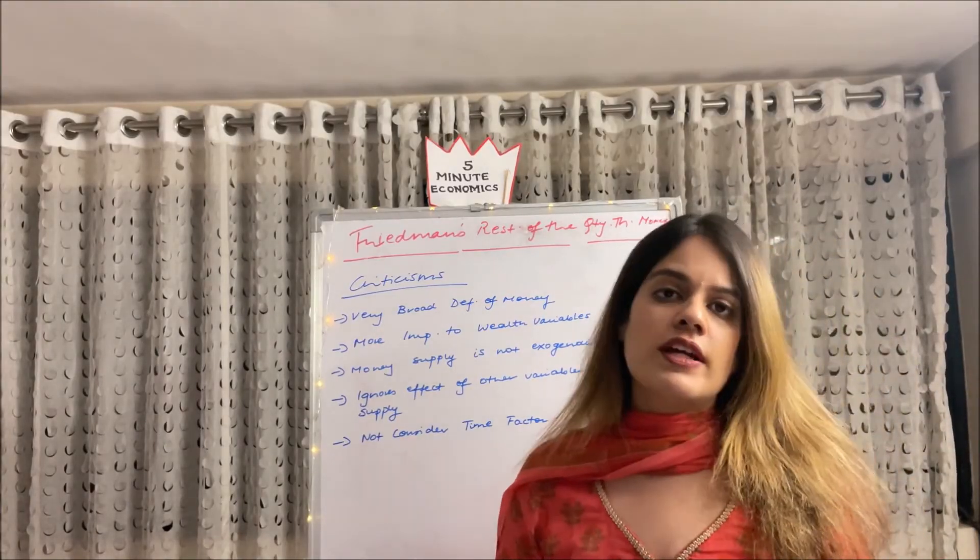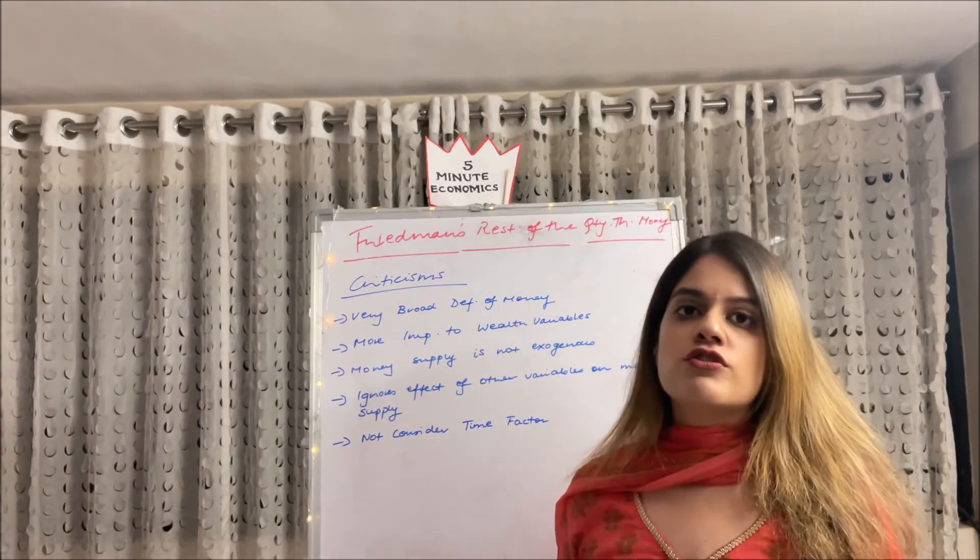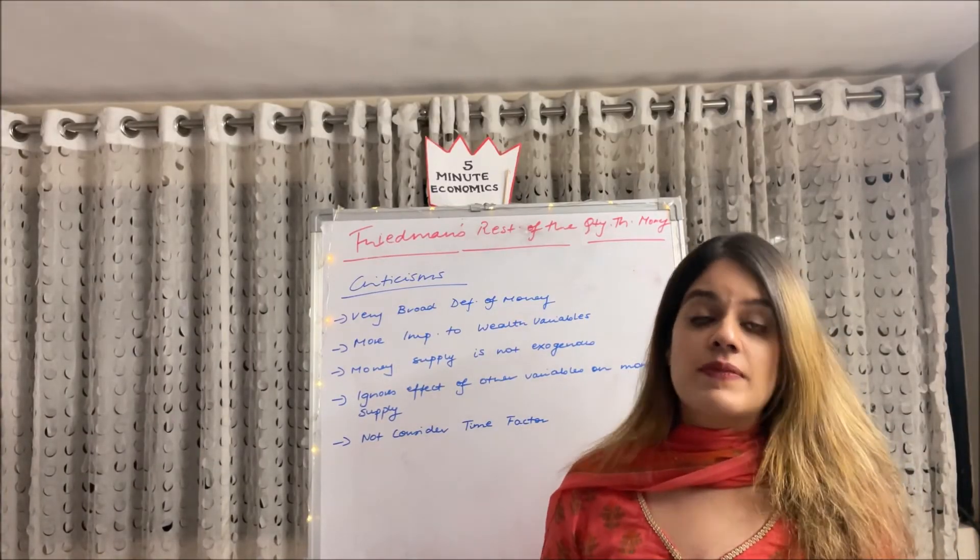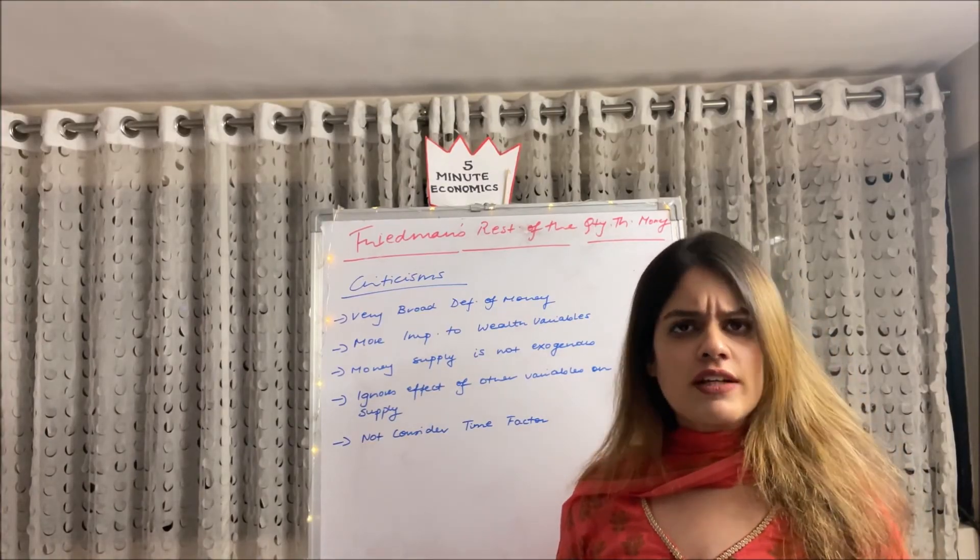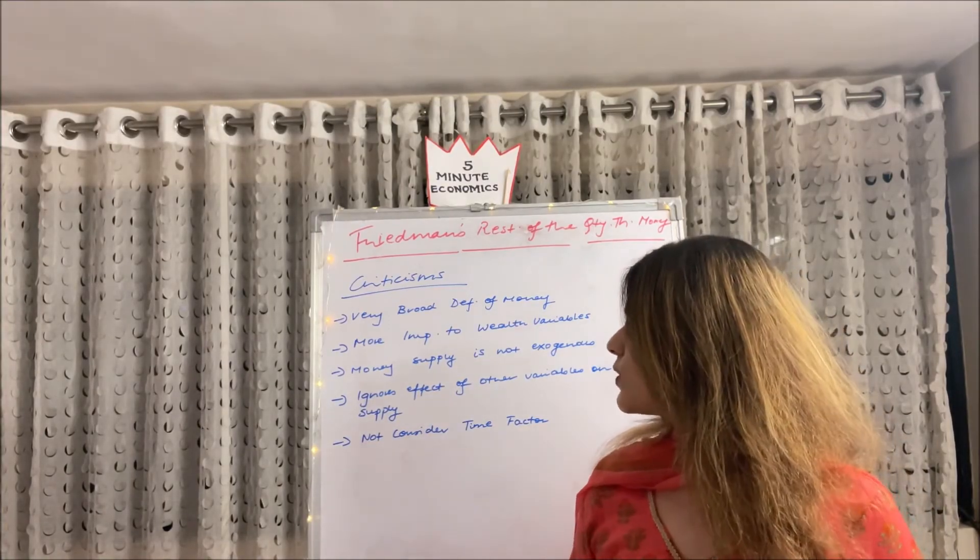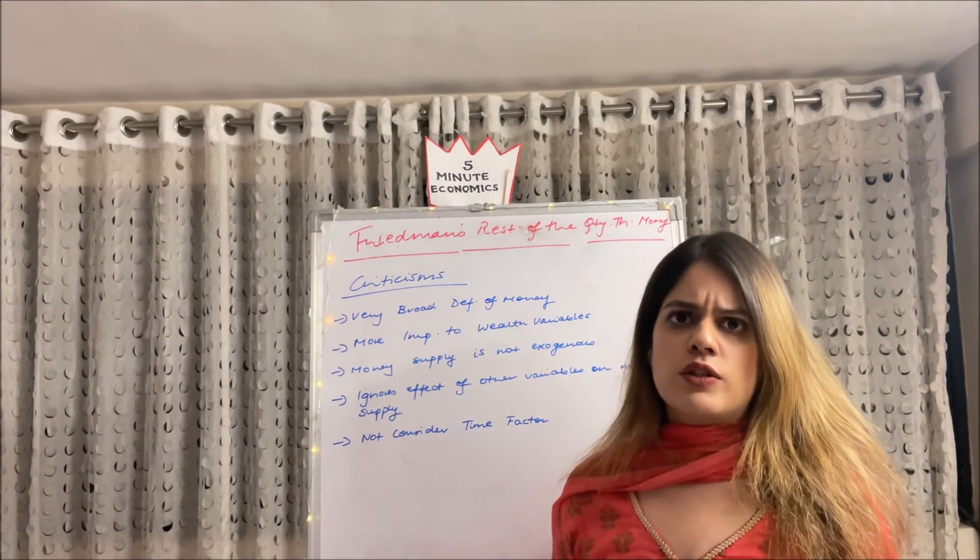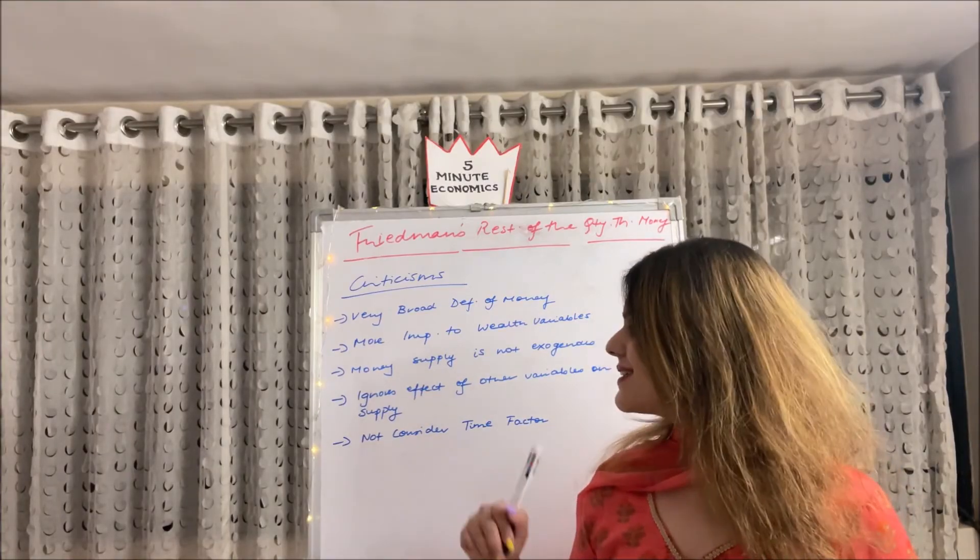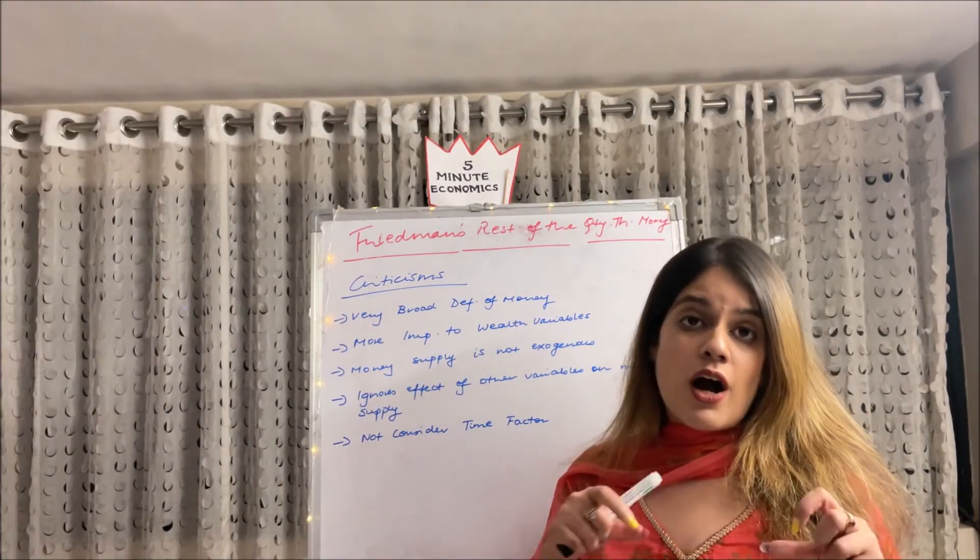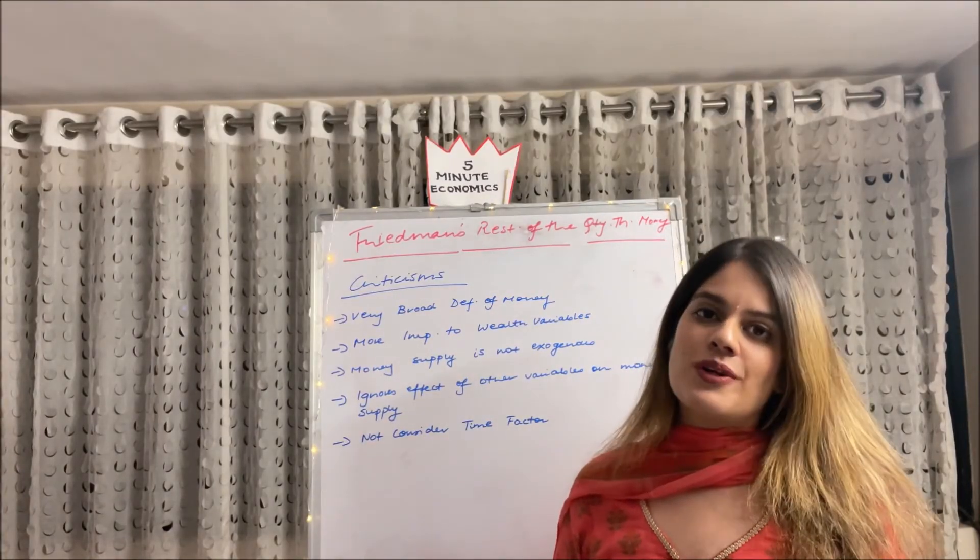Thirdly, money supply is not exogenous. So they have considered money supply exogenous, like central bank and other monetary authorities affect the money supply they have said that, but here it was criticized that money supply is not exogenous in fact. Next, ignores the effect of other variables on money supply. The effect of income, effect of prices, the other effects were completely ignored. And lastly they did not consider time factor, like how much time does it take to change the money supply. That was completely ignored in this theory.